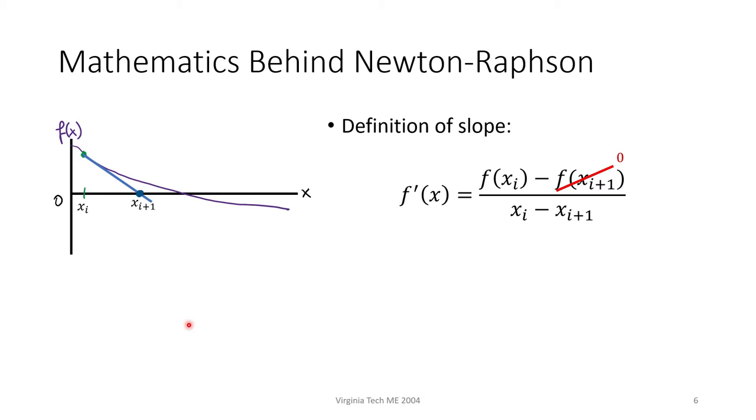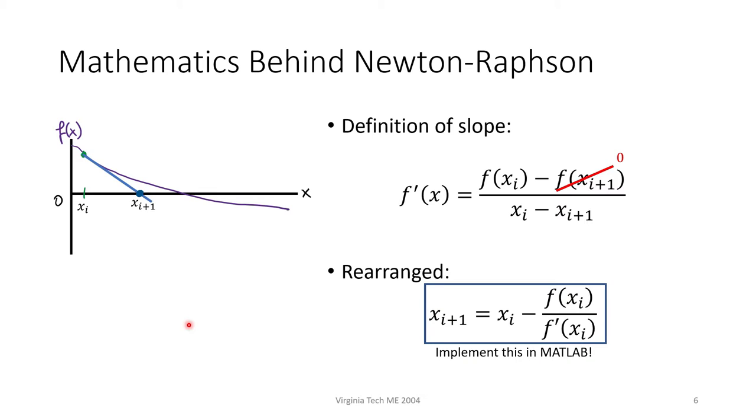If we want to solve for x sub i plus 1, all we have to do is rearrange this equation. When we do so, we get the Newton-Raphson formula. This is the equation you'll want to program into MATLAB.